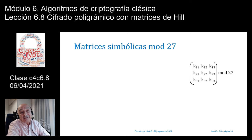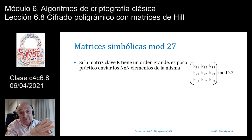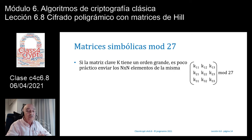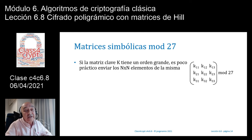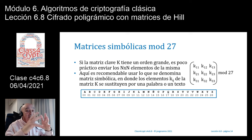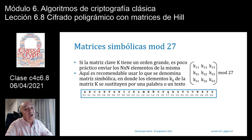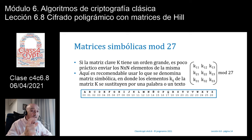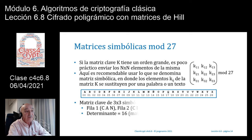Cuando tenemos matrices de orden mayor de 3×3, como 4×4 o 5×5, es complicado transmitir los 25 elementos de la clave. Lo que se hace es usar matrices simbólicas: asignar letras a los valores Kij de la matriz de forma que formen una palabra o frase. Al sustituir esas letras por sus códigos numéricos, el determinante no debe valer 0 ni tener factores con módulo 27. Por ejemplo, si la clave es la palabra 'canciones', obtenemos una matriz 3×3 con los códigos correspondientes.